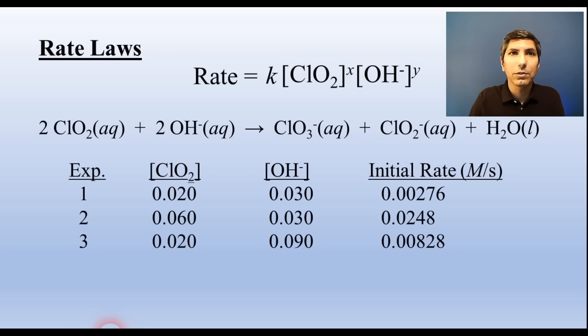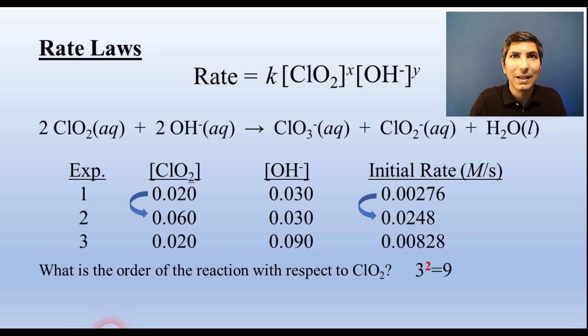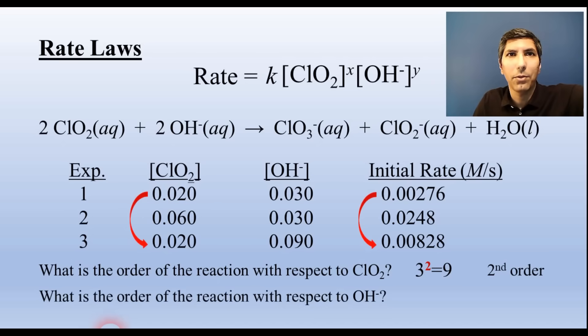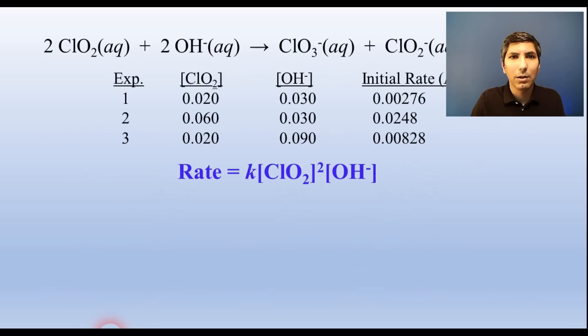For determining the powers or orders of the reaction for each reactant, we need experimental data like we have here. So for ClO2, we find two experiments where ClO2 is the only reactant changing. So let's use experiments one and two. Notice that as the concentration of ClO2 triples, the rate increases by a factor of nine. Since three to the second power is nine, the order for ClO2 is two. For hydroxide, let's use experiments one and three. As hydroxide triples, initial rate also triples. Since three to the first power is three, the order of hydroxide is one. So the rate law looks like this.